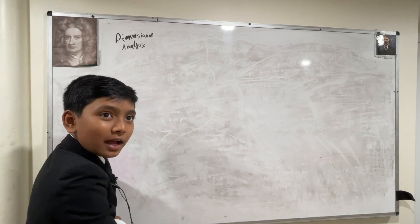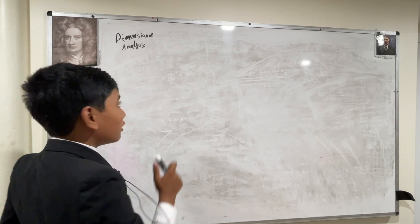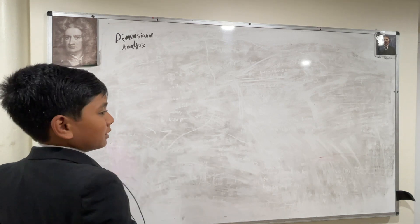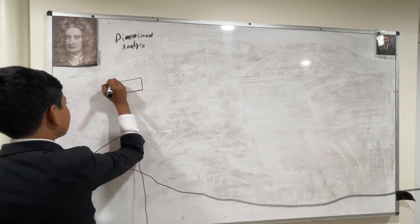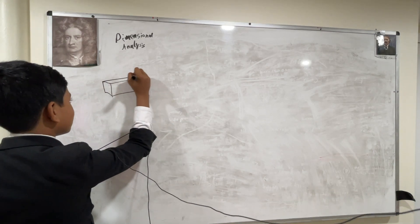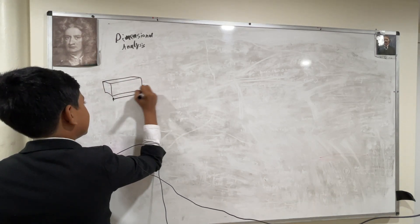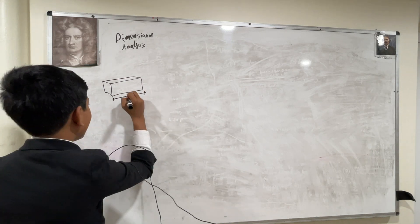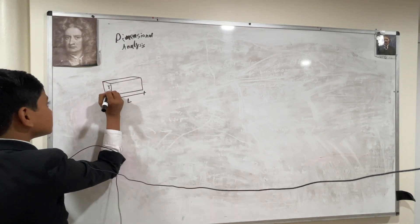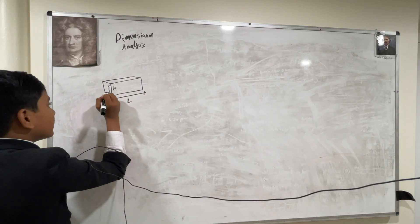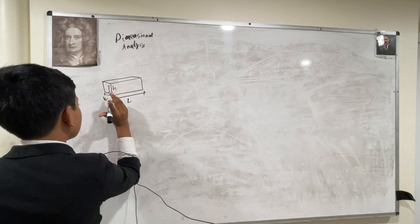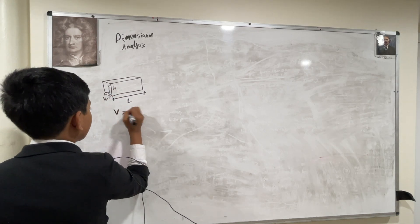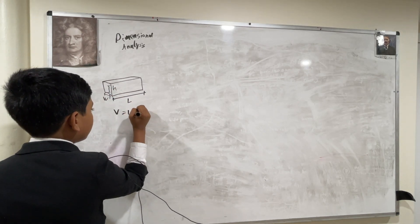That's not actually what Dimensional Analysis means. So, what does it actually mean? Well, let's get back to that rectangular prism. What is this? That's the length. This is the height, and that is the width. So the volume of this is length, height, width.